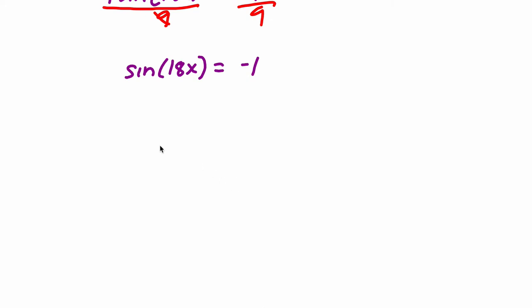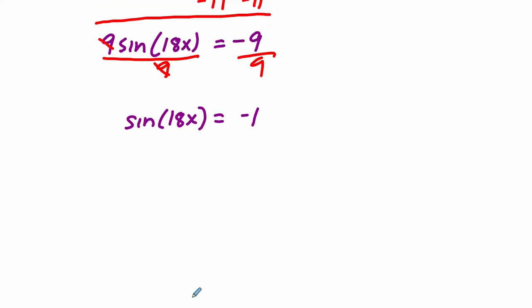Now we get to do, I think, one of the cooler steps. You can take the inverse sine of both sides. So the inverse sine of the sine of 18x will have to equal the inverse sine of negative 1. Isn't that cool? You can take the inverse sine of both sides, just like you can add or subtract to both sides. Now what happens is the inverse sine of the sine, those are inverse functions. They cancel each other out, and what will always be left is the value inside the parentheses here, which is just 18x.